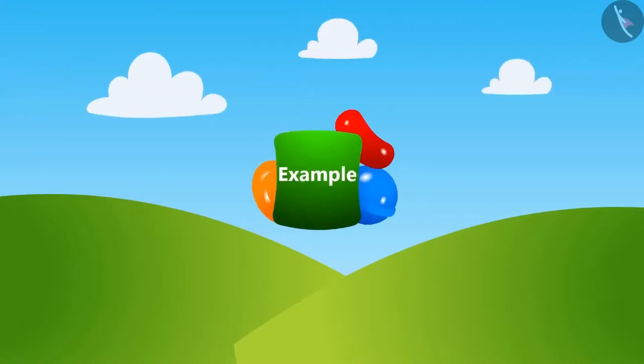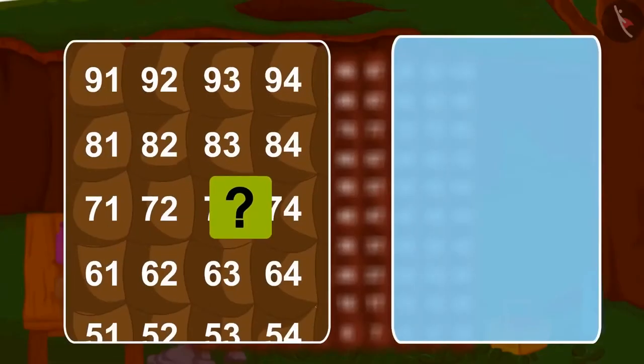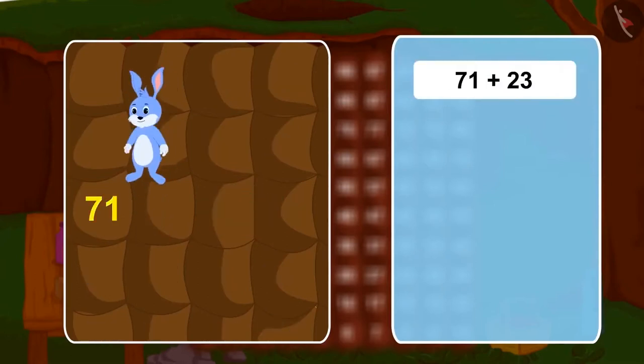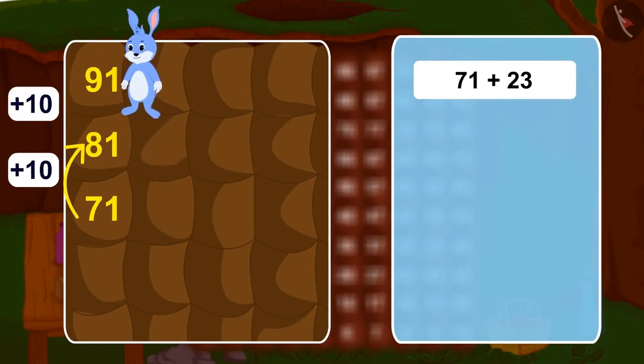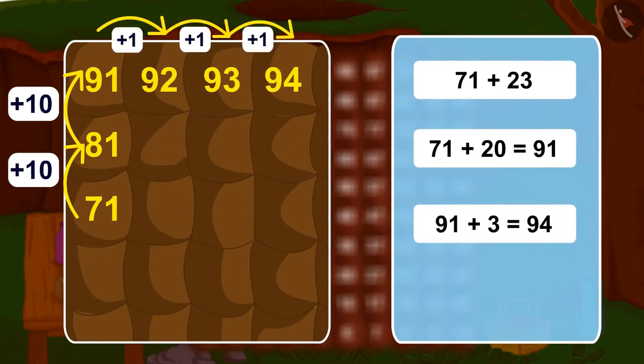Children, can you solve this riddle by using the rooms of Bunny's house? How many jumps will he have to take this time? Oh yes, we will first take two long jumps and reach 20 steps ahead to reach 91. And then, absolutely right, three steps further ahead and 23 steps more than 71, we will reach 94. In this way, adding 23 to 71 would give us 94.